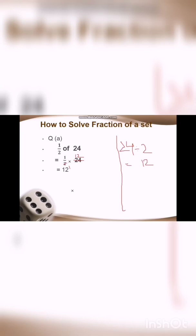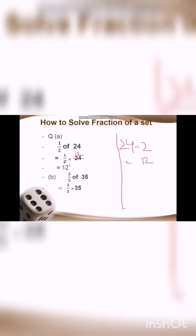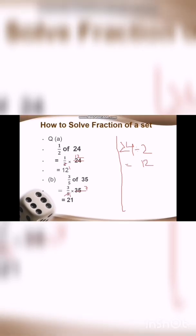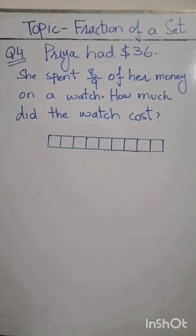This is how we mathematically solve fraction of a set. Now we have another example: three by five of thirty-five. 'Of' means multiply, so we put three by five multiplied by thirty-five. We cancel five — five goes once into five and seven times into thirty-five. Then we multiply seven by three and we get twenty-one. That is the solution of three by five of thirty-five.